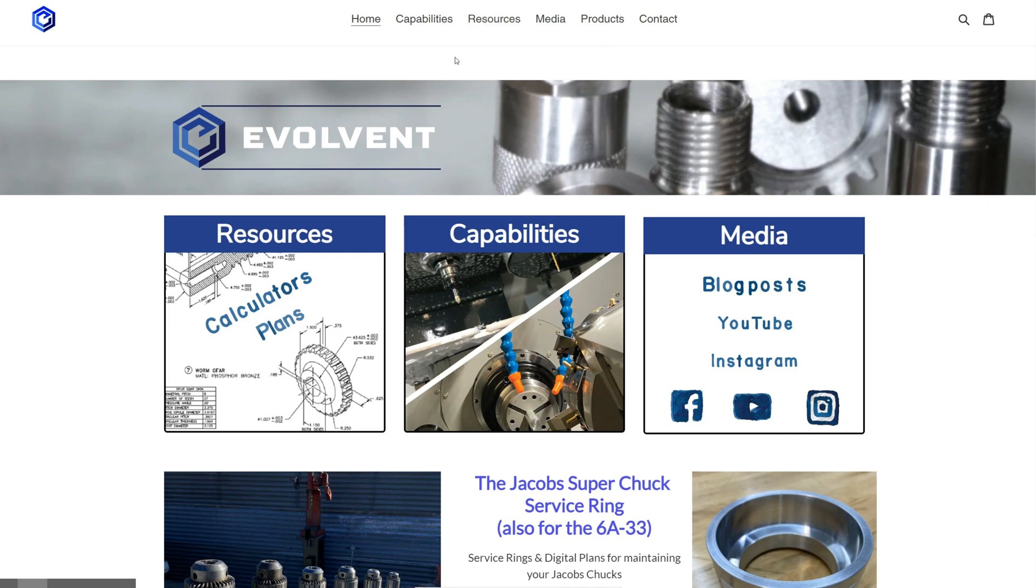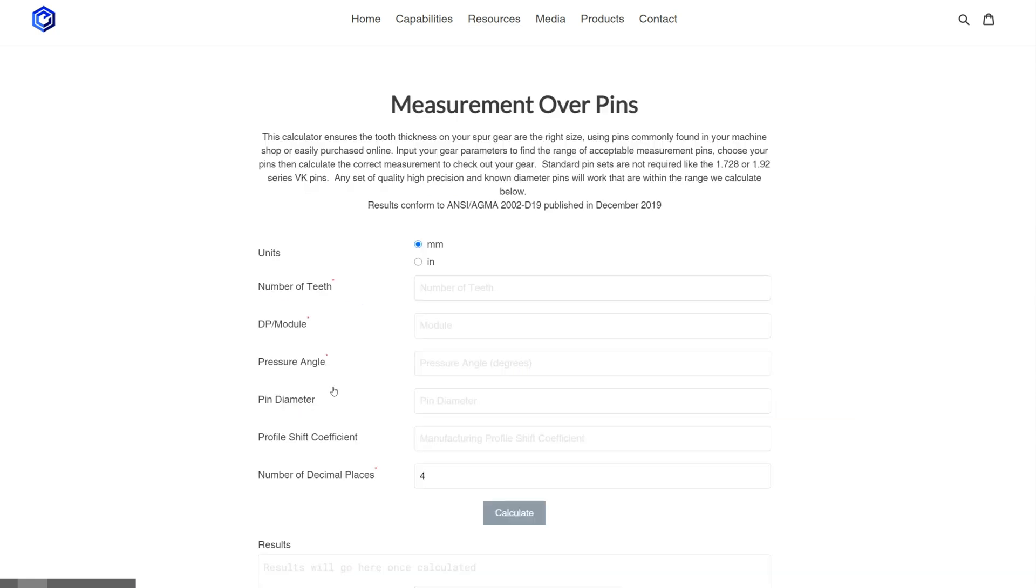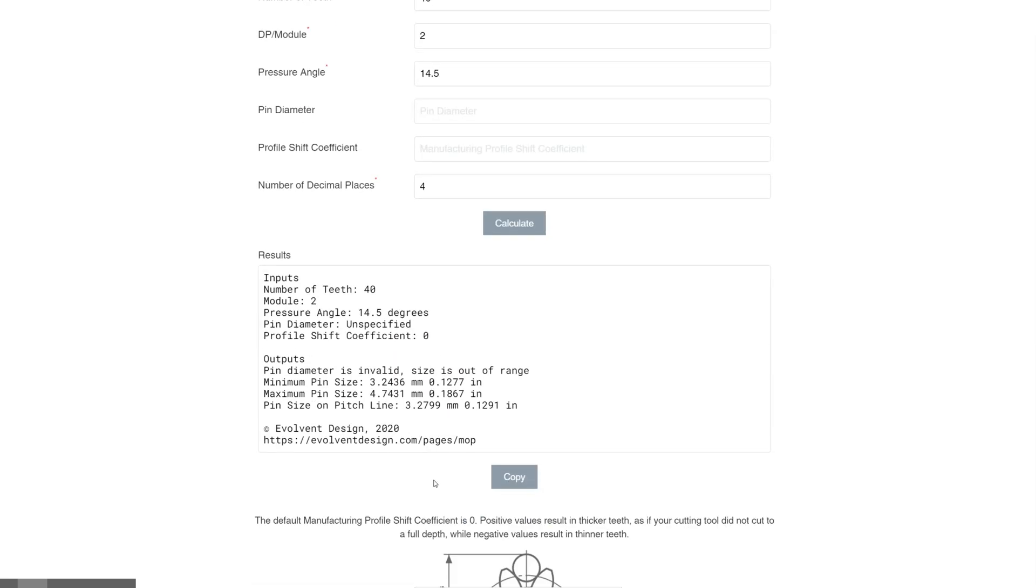So we're out in the shop looking at gears and let's come into our resources calculator and look at measurement over pins. All those were 40 tooth change gears, two module for the big one, pressure angle is 14.5. Pin diameter, we chose them for the large one, the pin diameter. We may not know to start with so just leave it blank, leave this blank, depending on how good your shop is. So the first time you run the calculator, it tells you that you didn't specify a pin but it tells you the pin size, the minimum and maximum right here.